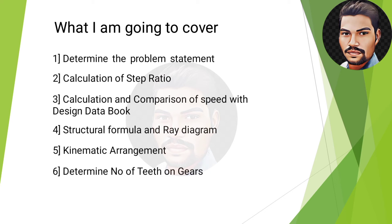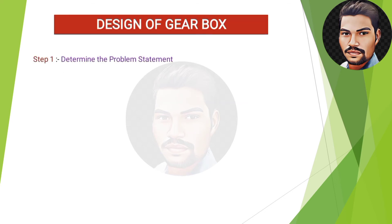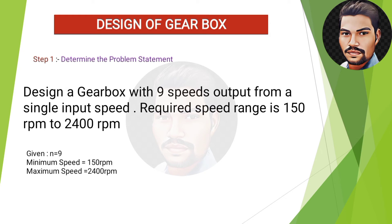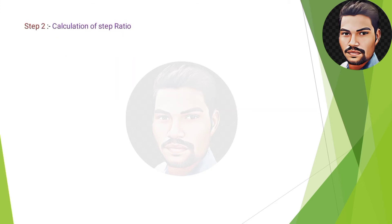To design a gearbox, our first step is to determine the problem statement. After trying many different problem statements and making many mistakes, I found one that fulfills all the criteria. In this problem statement, the minimum speed is 150 rpm, the maximum speed is 2400 rpm, and the number of speeds is 9.